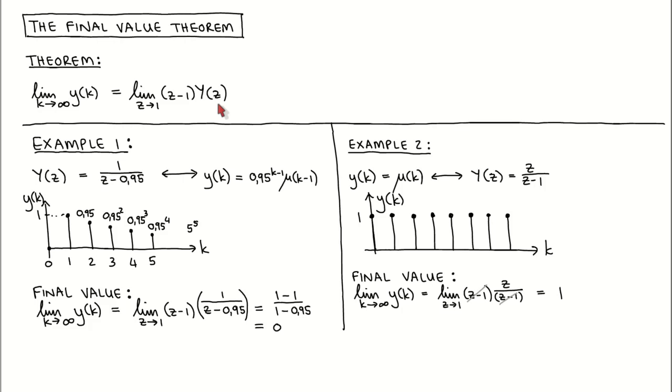To illustrate the final value theorem, let's look at two simple examples. For the first example, we use a signal that we've considered before, an exponentially decaying signal, of which we've previously calculated its Z-transform as 1 over Z minus 0.95. Since the signal decays exponentially, we know that its steady state value is zero.